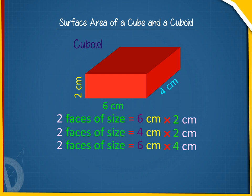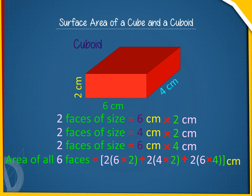Hence, the sum of the areas of all six faces is 2 into 6 by 2 plus 2 into 4 by 2 plus 2 into 6 by 4 cm square, i.e. 88 cm square.